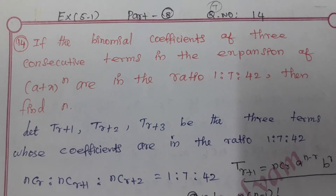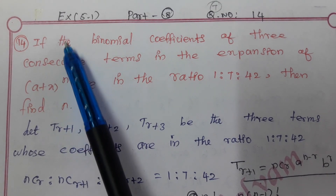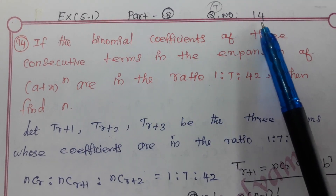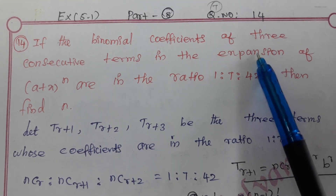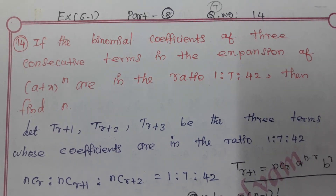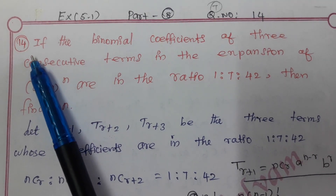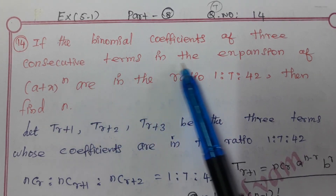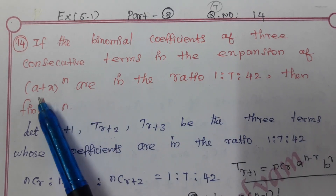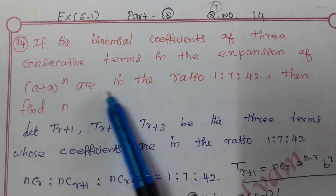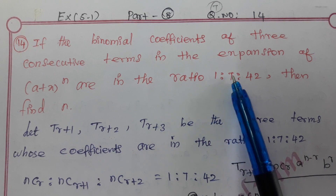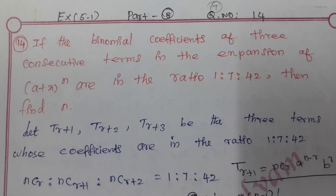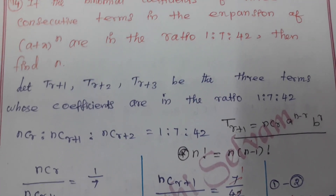Hello friends, welcome to our channel. In this class, exercise 5.1, part 8, question number 14 — one of the most important five-mark questions in this exercise. If the binomial coefficients of three consecutive terms in the expansion of (a + x)^n are in the ratio 1:7:42, then find the value of n.